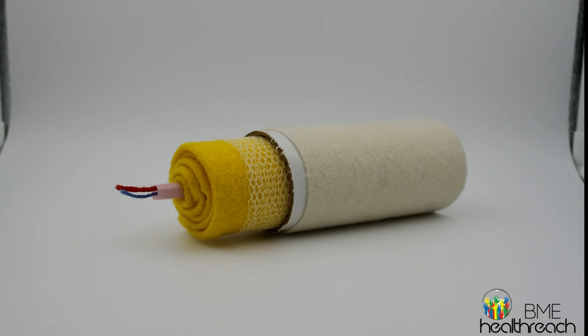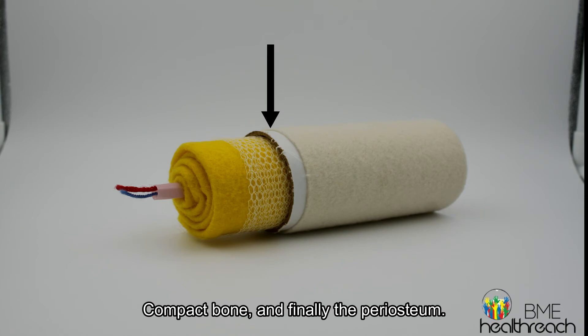To recap, bone is made up of multiple different layers. There are blood vessels, red marrow, then yellow marrow, spongy bone, compact bone, and finally, the periosteum.